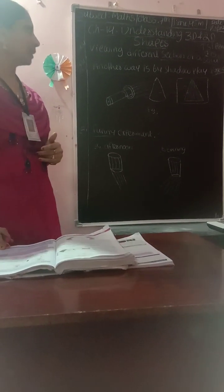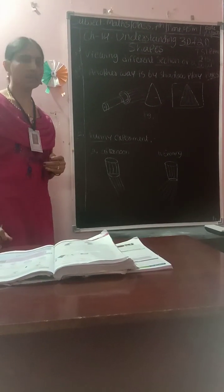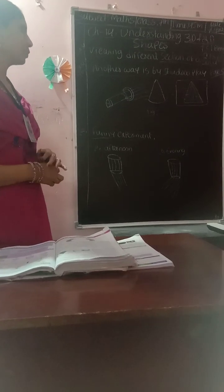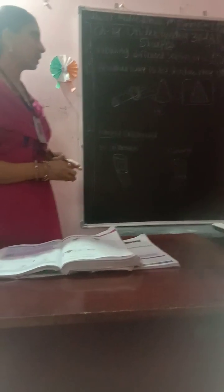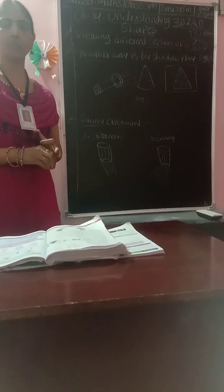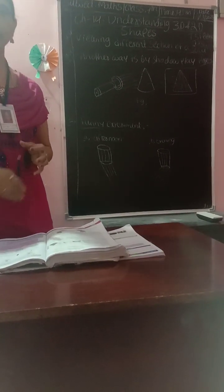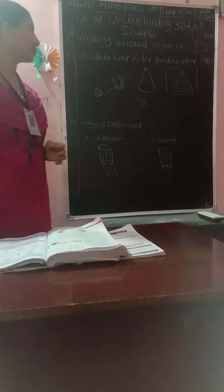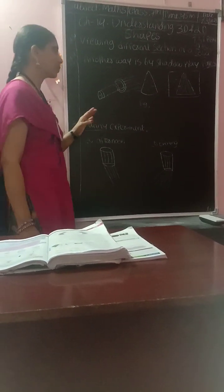What happens with the different types of objects — you can do the experiments with each other. In the previous class, it was already done. You can use different objects and different positions of the lights also.